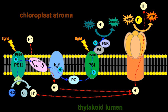The final electron acceptor is NADP+. In oxygenic photosynthesis, the first electron donor is water, creating oxygen as a waste product. In anoxygenic photosynthesis, various electron donors are used. Cytochrome B6F and ATP synthase work together to create ATP.